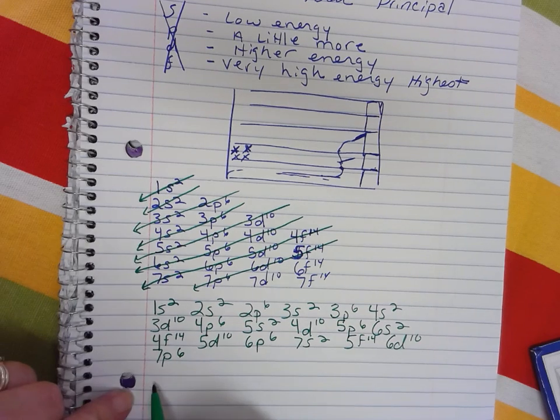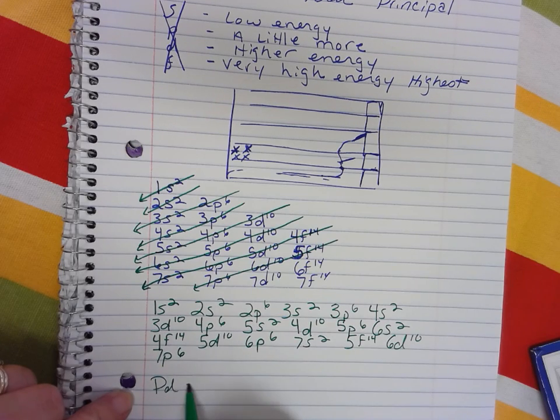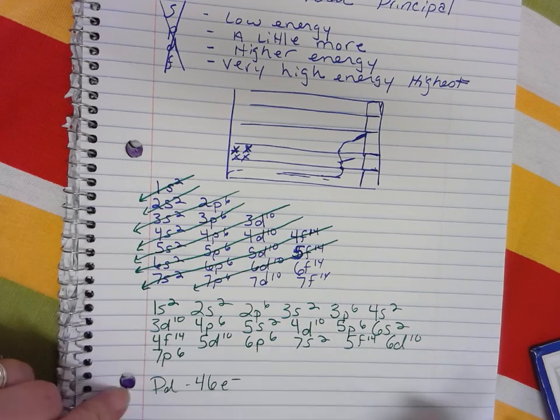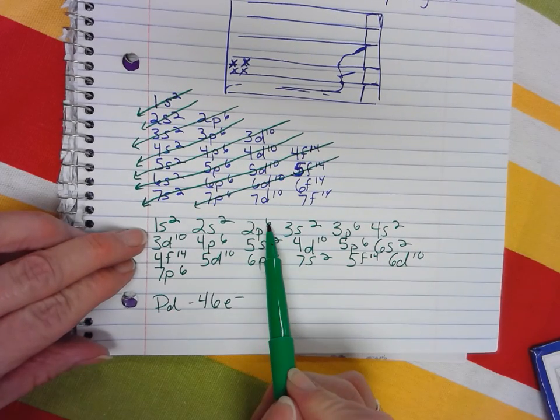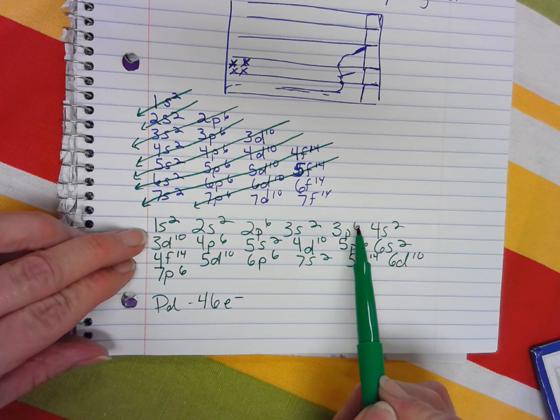So, palladium with 46 electrons. And I'm just going to count 2, 4, 10, 12, 18, 20,